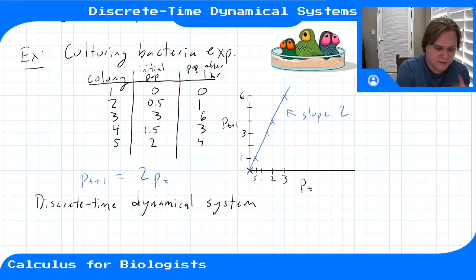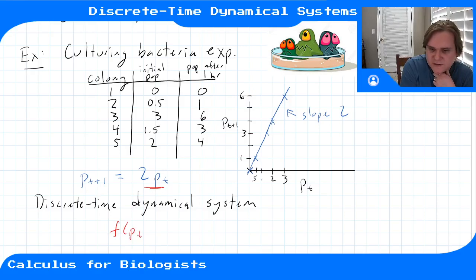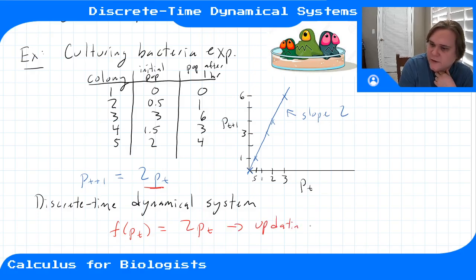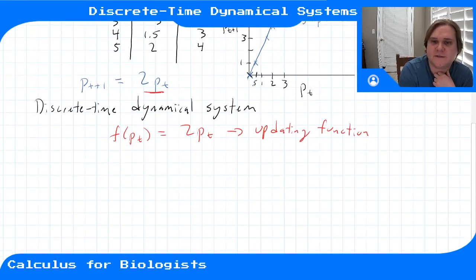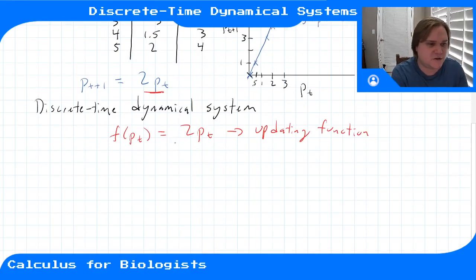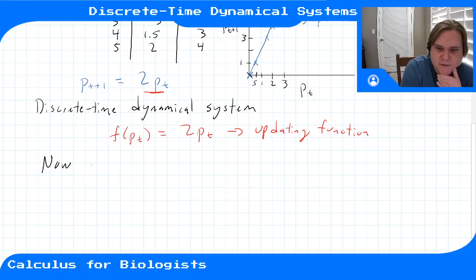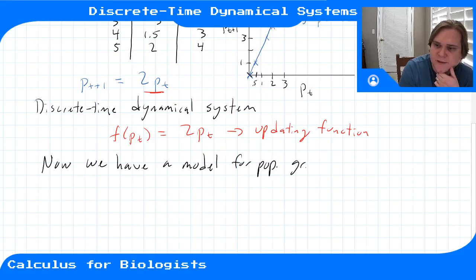On the right-hand side, this 2·p(t) — this function of our current state — is what we call the updating function. What we can do with this model is predict the future. We gathered some data, we built a model that describes the rule that describes this data, and now we have a model for population growth in this experiment.